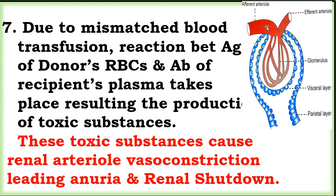In the kidney, the afferent arteriole leads into the nephron, and the efferent arteriole leads out. Toxic substances cause renal dysfunction — anuria results from a stoppage of urine formation, which causes a strong systemic reaction.